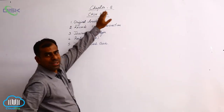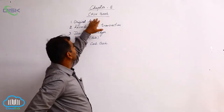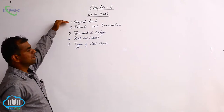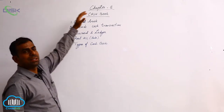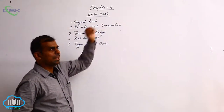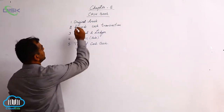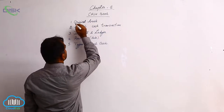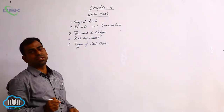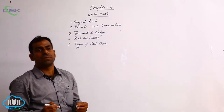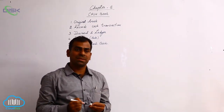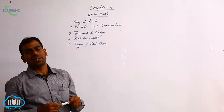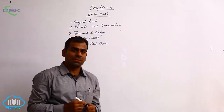The next chapter, chapter 8, is cash book. Today we are going to discuss about cash book. Cash book is one of the original books, what we call as subsidiary books or we call them as special journals.